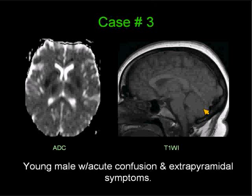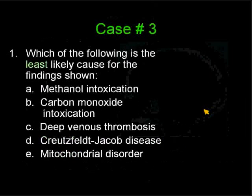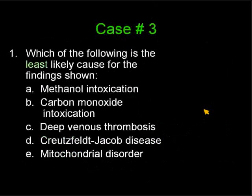Question number one: which is the least likely cause for the findings shown here? A, methanol intoxication. B, carbon monoxide intoxication. C, deep venous thrombosis. D, Creutzfeldt-Jakob disease. And E, a mitochondrial disorder. Which is the least likely cause?